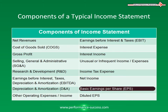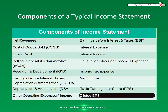Basic Earnings Per Share, or EPS. This is net income divided by basic weighted average shares outstanding. Diluted EPS is net income divided by diluted weighted average shares outstanding.